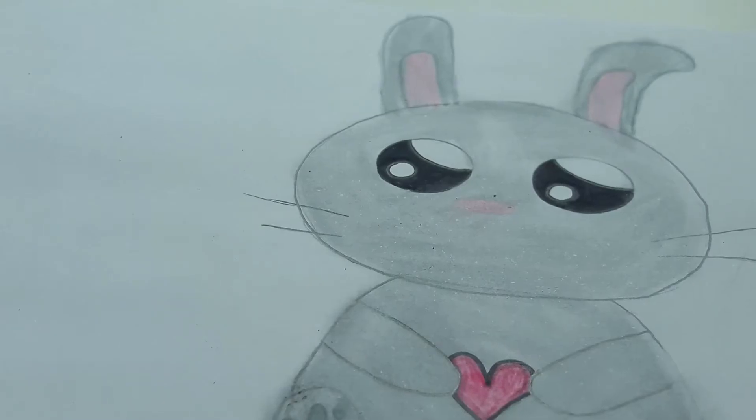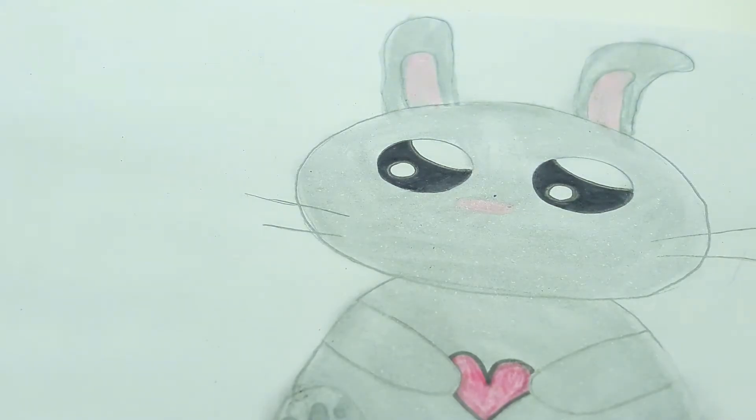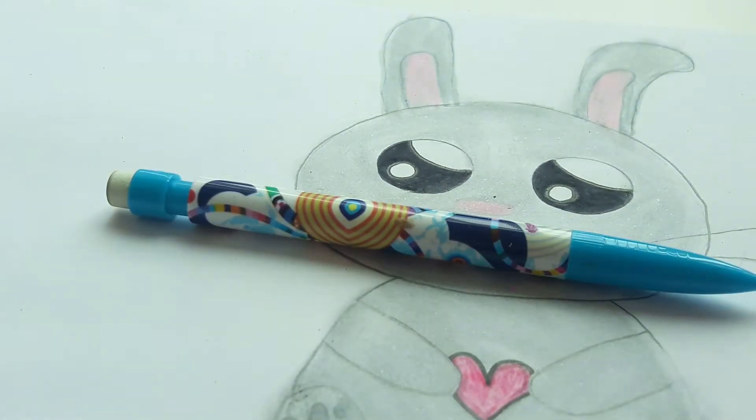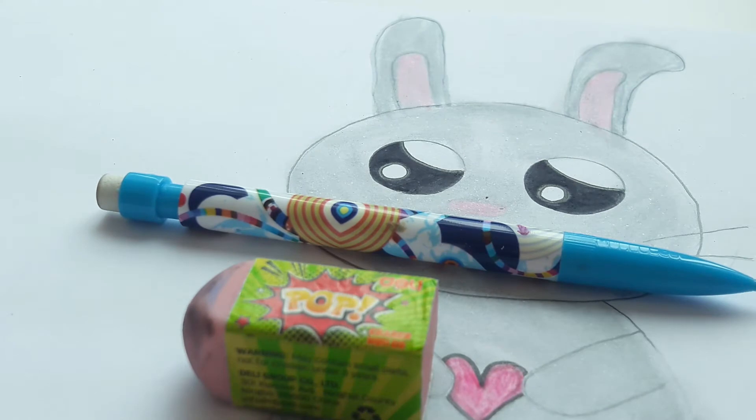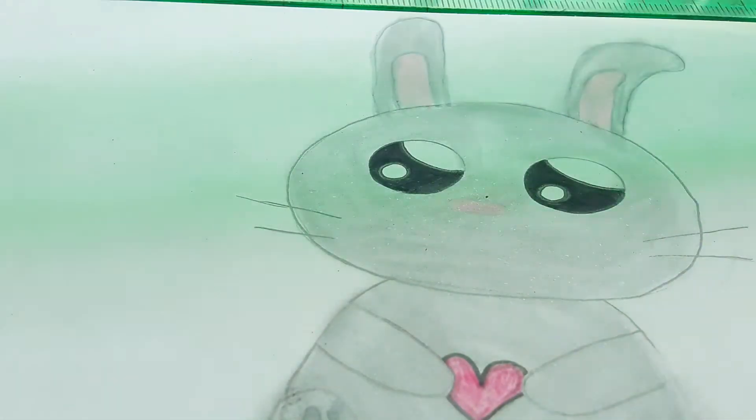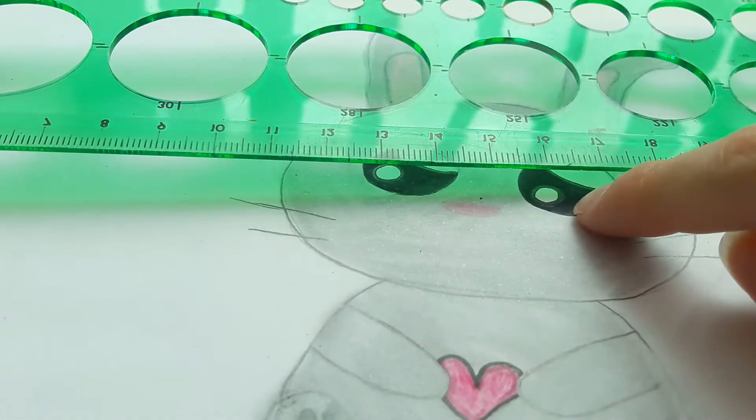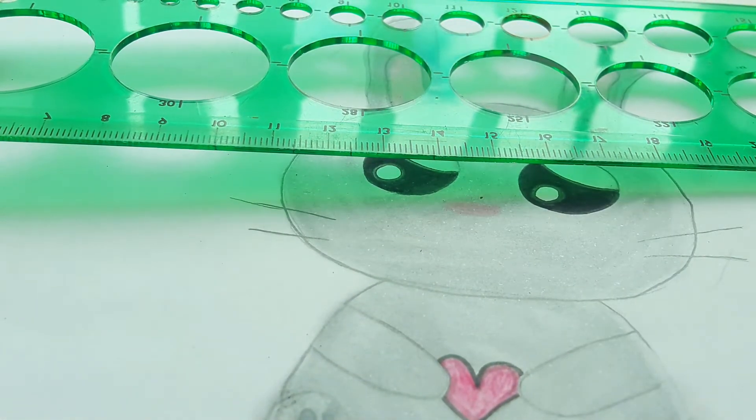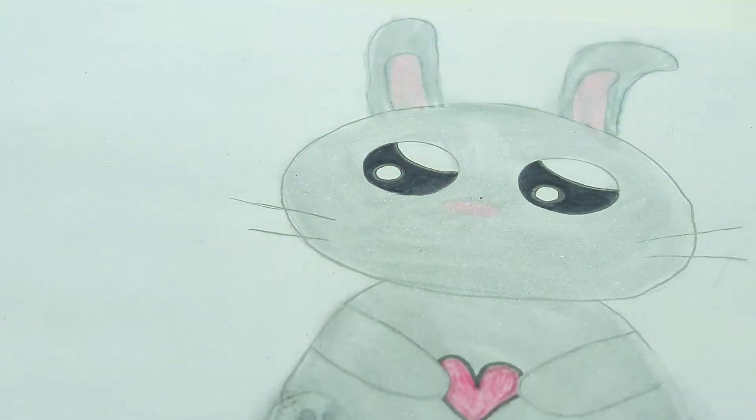To draw this you will need a pencil with an eraser. I would really recommend using a circle ruler to do your eyes, but if you don't want to that is okay. You will also be needing a coloring material to color your bunny, mostly gray, pink, and black.